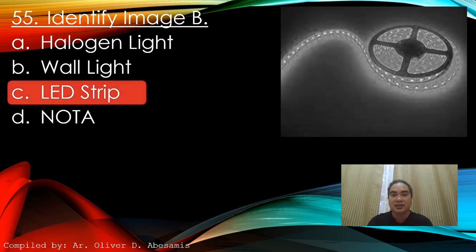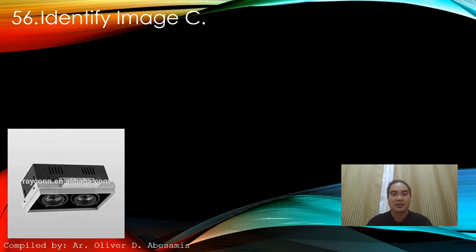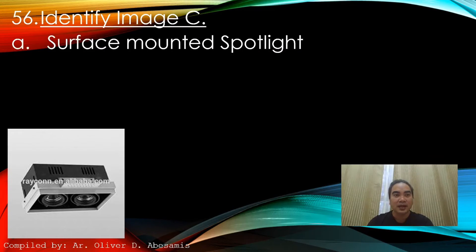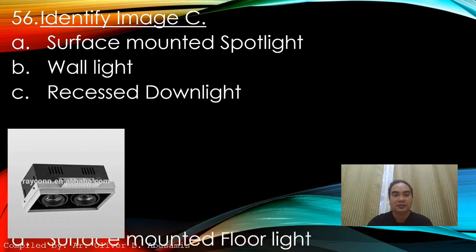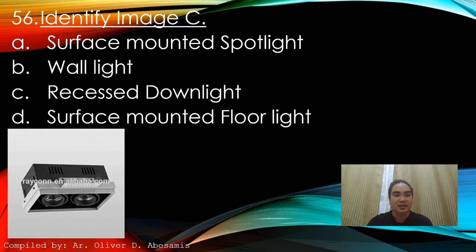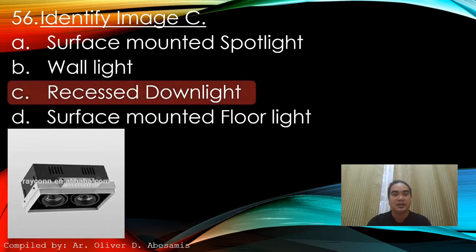Identify the image. A. Surface mounted spotlight. B. Wall light. C. Recessed downlight. D. Surface mounted floor light. Answer: C. Recessed downlight.